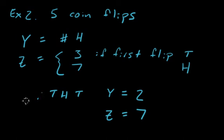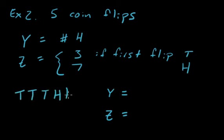Another trial: say you get tails, tails, tails, heads, heads. This is just another possible outcome of your random event. y is the number of heads, which is 2. z depends only on the first flip. The first flip is tails, so z takes the value of 3. So that's example 2.